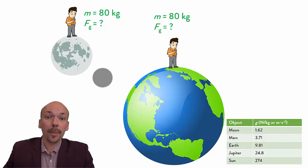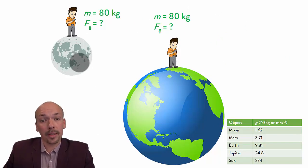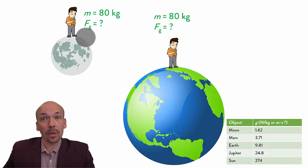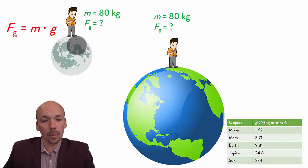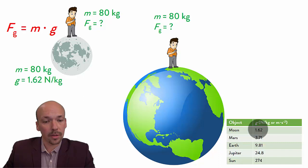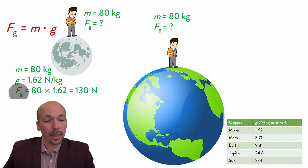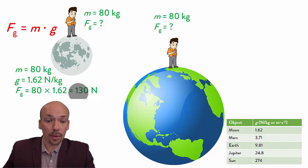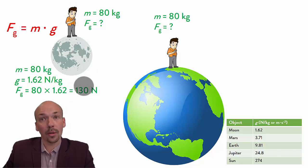Here we have the same guy standing on Earth and standing on the moon. We know he's the same because his mass is the same — in this instance, he's 80 kilograms. But his gravitational force will be different. First we calculate for the moon. We use this equation: Fg is m times g. The m is given — it's 80 kilograms. G for the moon is 1.62. So we get Fg is 80 times 1.62, which equals 130 newtons. So his gravitational force on the moon is 130 newtons.